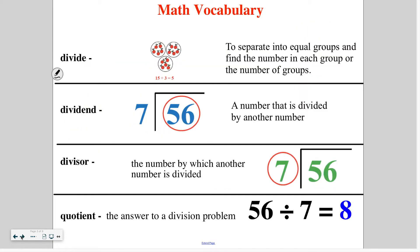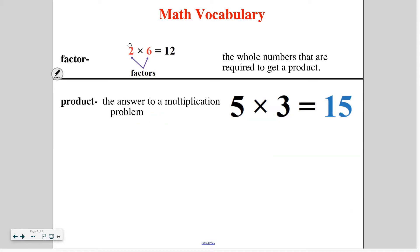Let's look at our vocabulary. Since we're looking at division and multiplication, I want to go over related words for those operations. To divide means to separate into equal groups and find the number in each group or the number of groups. The dividend is the number you're dividing, the divisor is the number you divide by, and the quotient is your answer. The factors are the numbers you multiply to get an answer, and that answer in multiplication is called the product.